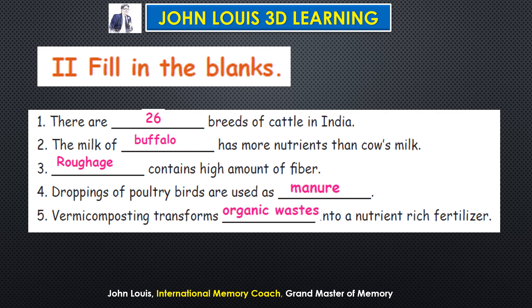Consolidated fill-in-the-blank answers: there are 26 breeds of cattle in India. The milk of buffalo has more nutrients than cow's milk. Roughage contains a high amount of fiber. Droppings of poultry birds are used as manure. Vermicomposting transforms organic waste into a nutrient-rich fertilizer.